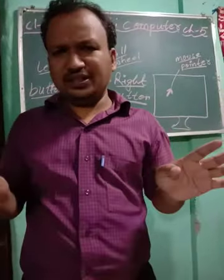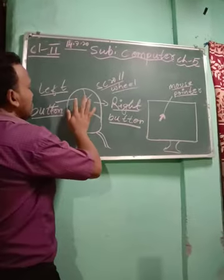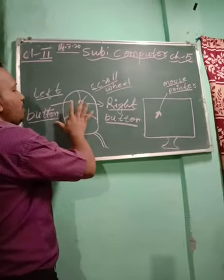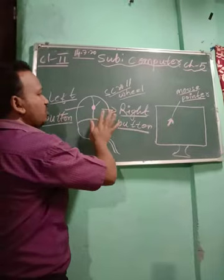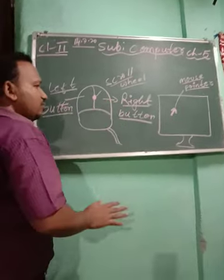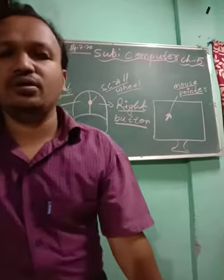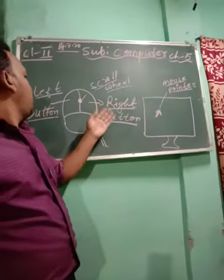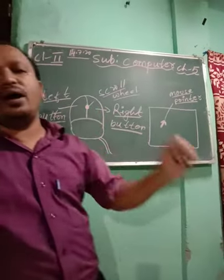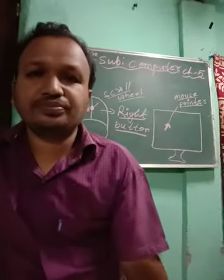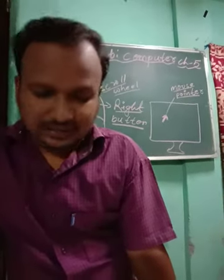Left click means when you click once on the left button of the mouse. Right click means when you click once on the right button of the mouse.